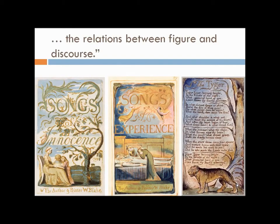First I wanted to look at the relationship between figure and discourse, and I think that is best exemplified by William Blake's Psalms. He pretty much developed one variation of illuminated printing. What he would do is etch on a copper plate — he would create the drawings and the text. He would have to write backwards so that when he printed, the text could come out correctly. And in his prints, you can clearly see the relationship between figures or images and discourse or text.